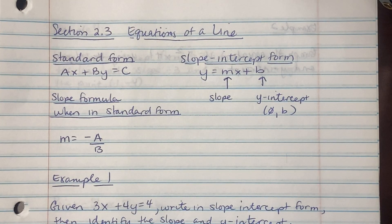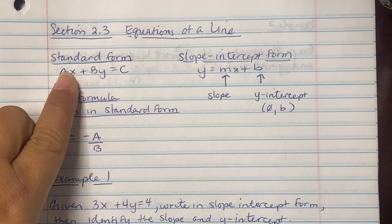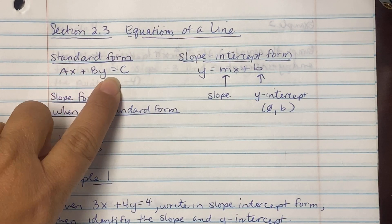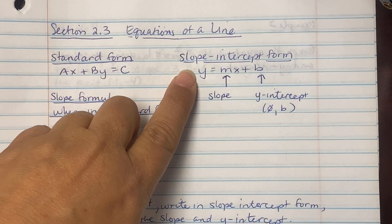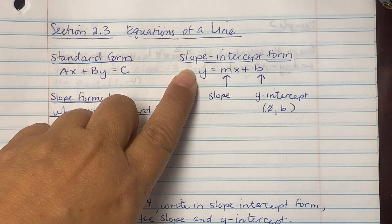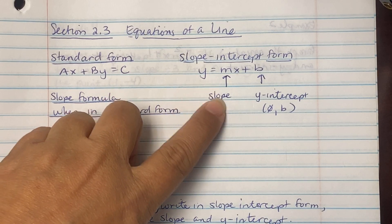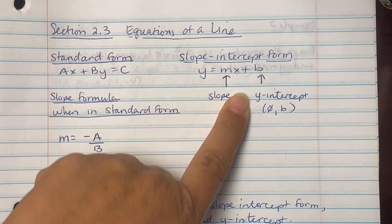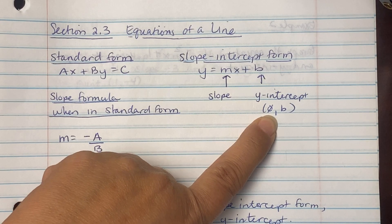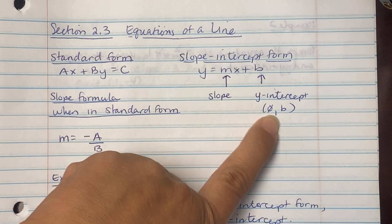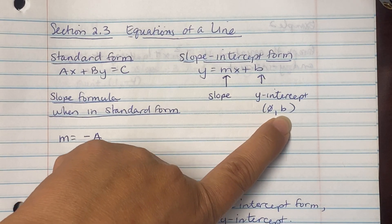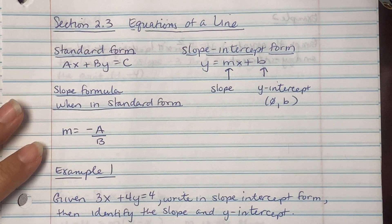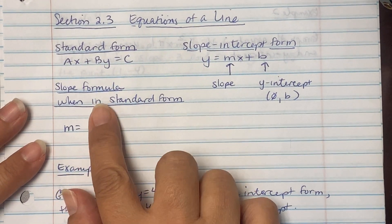Section 2.3: Equations of a Line. We have standard form Ax plus By equals C, and slope-intercept form y equals mx plus b, where m represents the slope and b is the y-intercept — the ordered pair zero comma b.